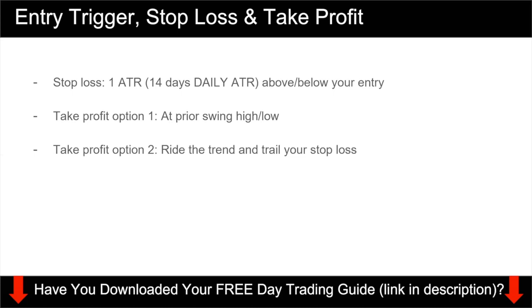You can set your stop loss as 1 ATR above or below your entry. In this case, you are looking at the 14-day daily ATR. That means you go on to the daily chart and find out what the ATR is. If the ATR is 40 pips, then you're going to set a stop loss of 40 pips from your entry. For take profit, you have two options. Option number one is if you are just trying to catch a swing — what you can do is exit at the previous swing high or swing low. Option number two is if you want to ride the trend, then you can trail your stop loss.